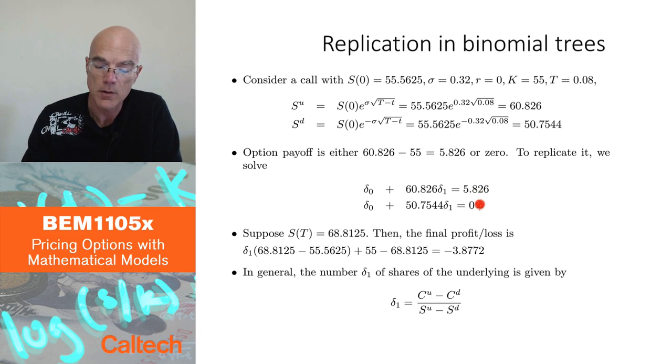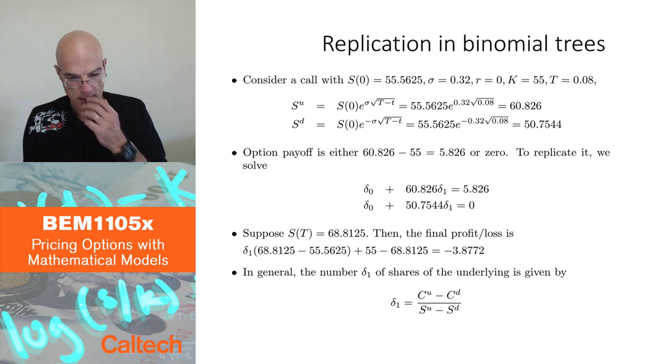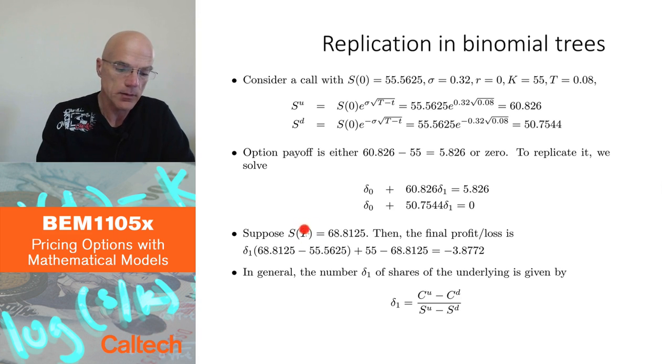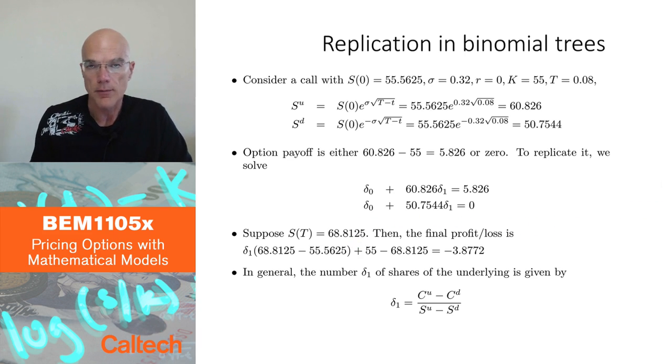This is what you do if you believe in a model. You try to replicate these two possibilities by trading in the bank and the stock. So you can compute delta_0 and delta_1 from this system of two equations by two unknowns. That's why this model is complete, because you can just solve for the replicating strategy. And let's say you do that. And it turns out that at the end, at maturity, the price is 68.81.